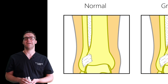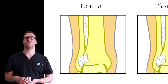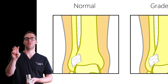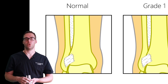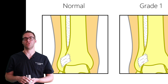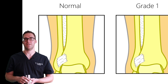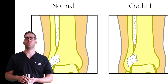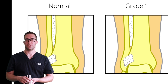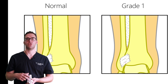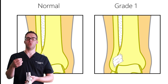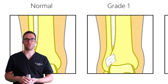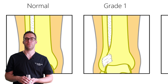Ankle sprains come in three grades. Grade one is like a tweak — a strain of the ligaments. That usually means one to two weeks to start feeling better. Baby it, use a boot, use an ankle brace, don't play sports for like a week or two.